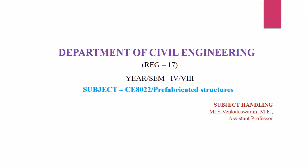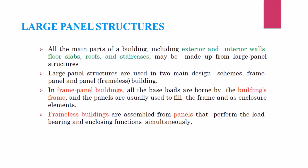Welcome to the prefabricated structures lecture. We are going to discuss a few things left in the second unit. First, we will discuss the large panel structure. In our previous lectures we discussed it briefly, but now we are going to elaborate on it. The components of large panel structures include exterior and interior walls, floor slabs, roofs, and staircases — these are the main parts of the building.